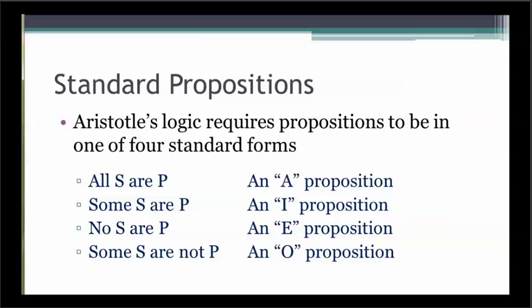The four types are: all S are P, some S are P, no S are P, and some S are not P. For convenience, a letter abbreviation is used to refer to each of the four types: A, E, I, and O. Each of the four types has a unique combination of the characteristics of quality and quantity.